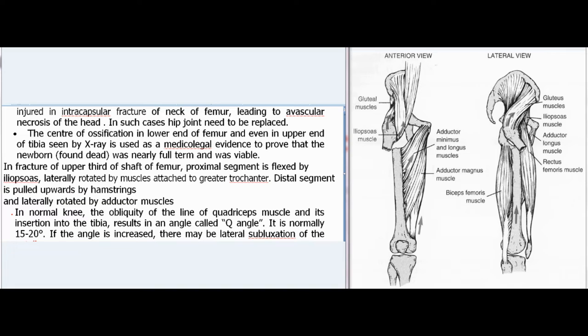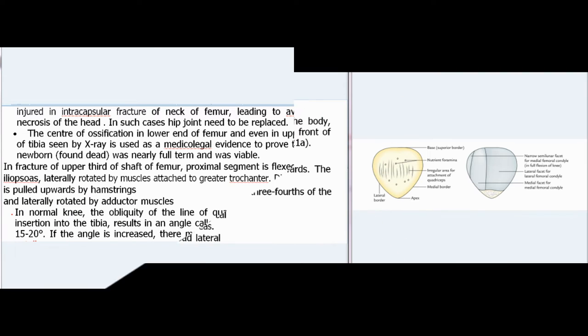In fracture of the upper third of the shaft of femur, the proximal segment is flexed by iliopsoas and laterally rotated by muscles attached to the greater trochanter. The distal segment is pulled upwards by hamstrings and laterally rotated by adductor muscles. In a normal knee, the obliquity of the line of quadriceps muscle and its insertion into the tibia results in an angle called the Q-angle, normally 15 to 20 degrees. If the angle is increased, there may be lateral subluxation of the patella.